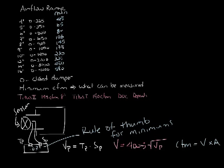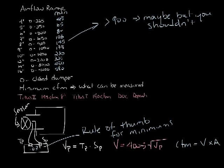So now let's look at the maximum number. Obviously you could force a lot more air through an 8-inch VAV box than 900 CFM, but like they say, just because you can do it doesn't mean you should.